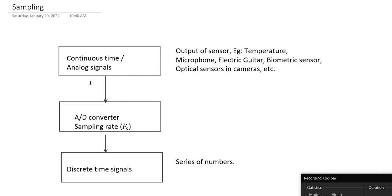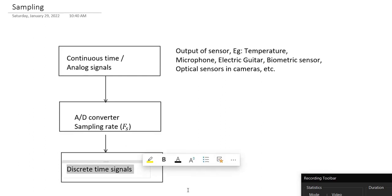The device which converts a continuous time signal into a discrete time signal is called an A-to-D converter, which is an analog to digital converter. The most important aspect of the A-to-D converter is its sampling rate, fs, which means how many samples of the continuous time signal the A-to-D converter is taking in one second. The output of the A-to-D converter will be a series of numbers, which we'll call the discrete time signal.